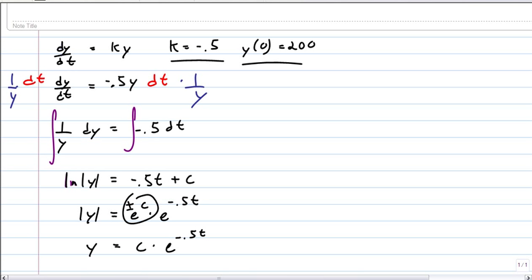So there we go. Now we're just ready to use our initial condition. It says when x is 0, y is 200. So if you use that initial condition on this guy here, you end up with c equals 200. So your solution to the differential equation is y equals 200 times e to the negative 0.5t. There you go, that's the solution.